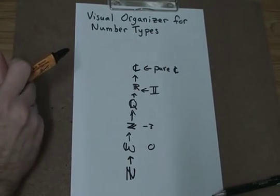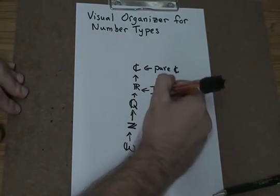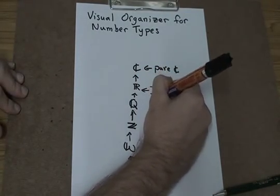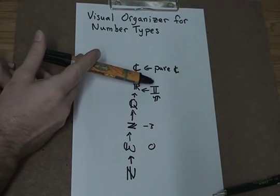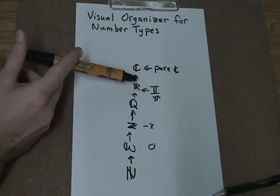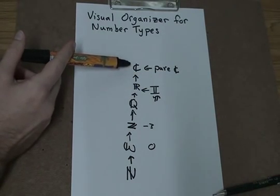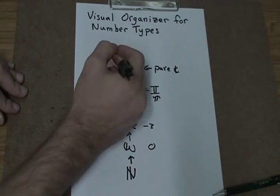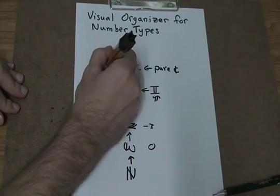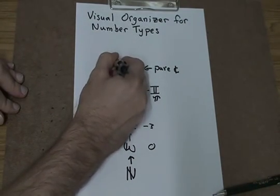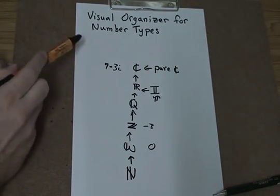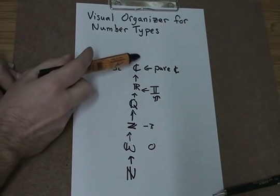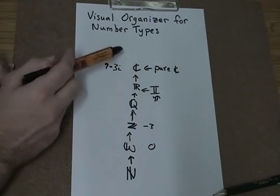For the number pi, the smallest group that pi belongs to is irrational — that means pi is irrational, real, and complex. For the number seven minus three i, it is only a complex number and is not part of any other group.